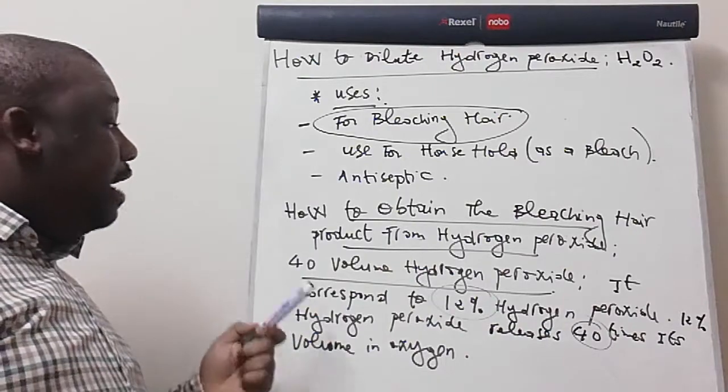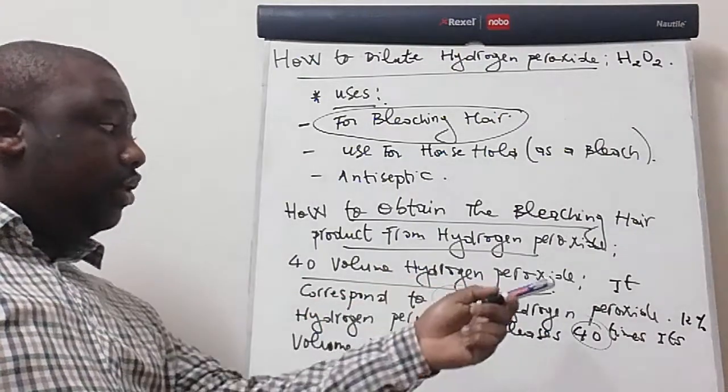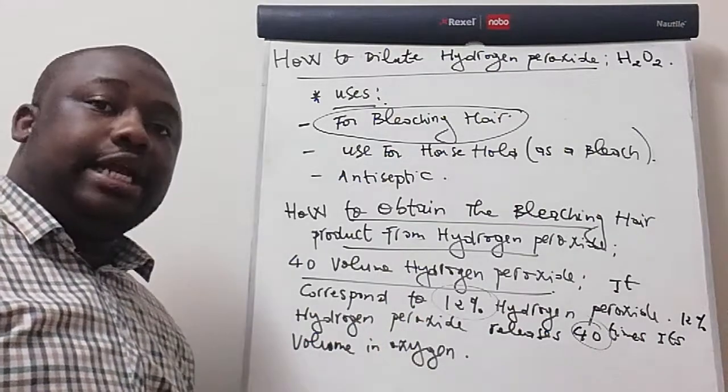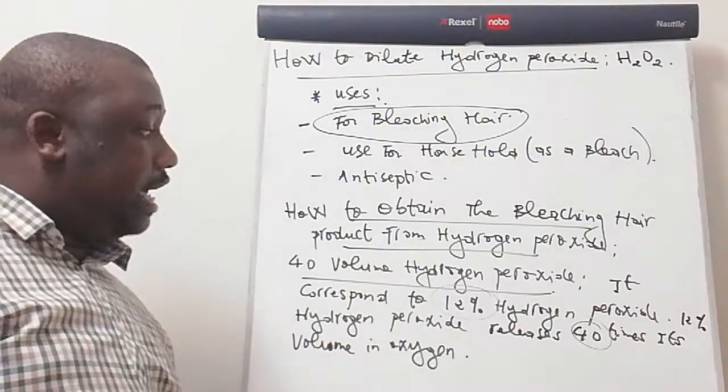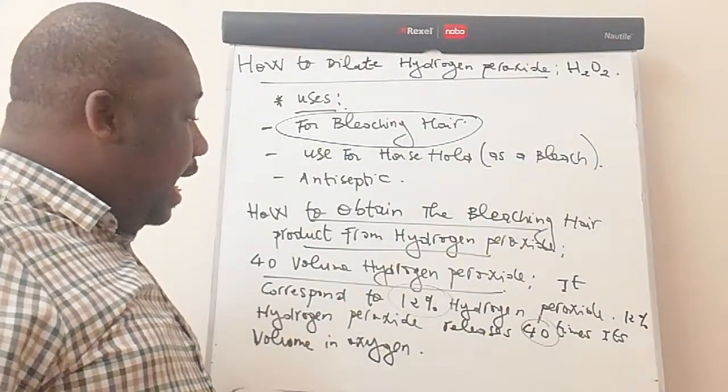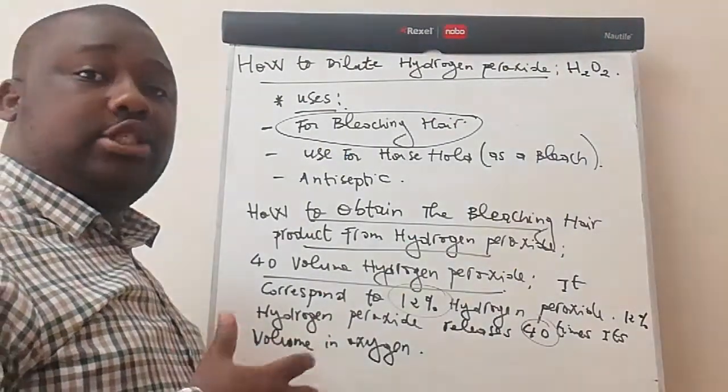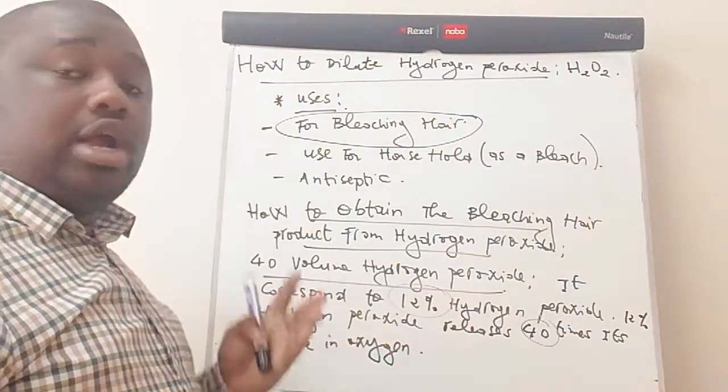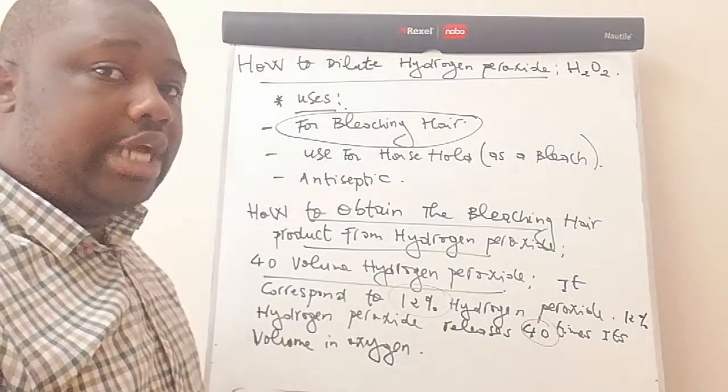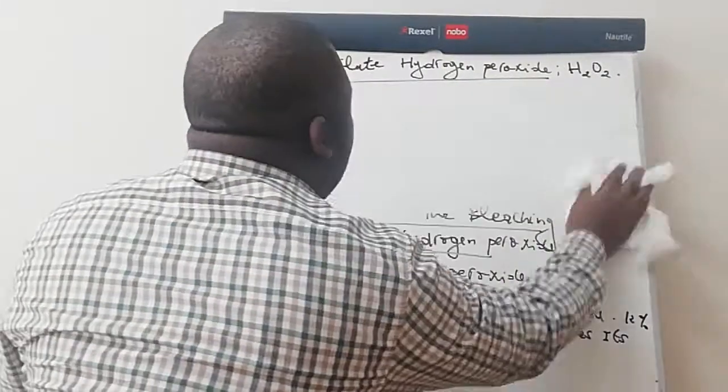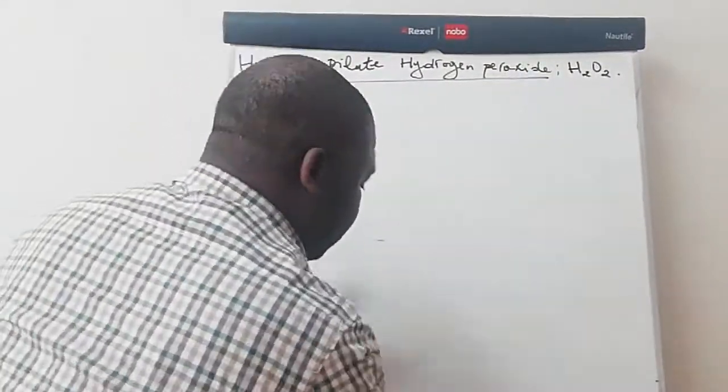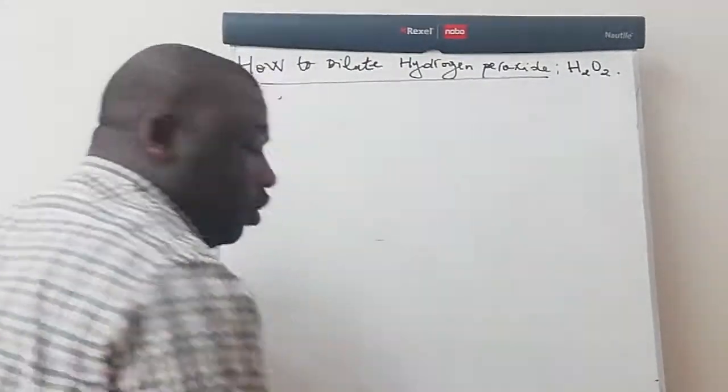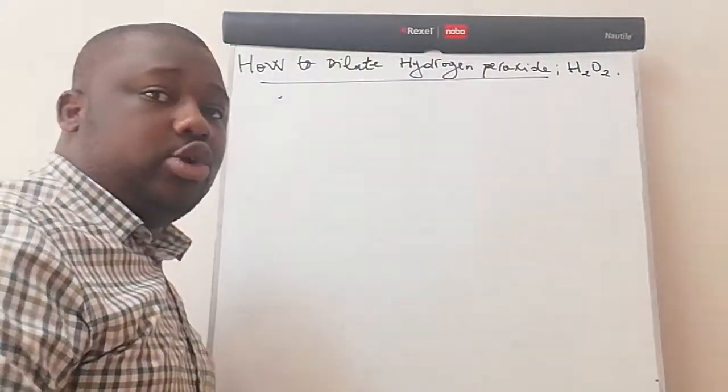So when you go to the shop and buy your 40 volume hydrogen peroxide, you will be actually using 12% of hydrogen peroxide. This is actually very important and it corresponds to the highest concentration for bleaching hair. Then from now on, let me show you how to dilute. Let us get into the dilution part now.